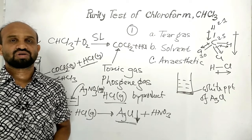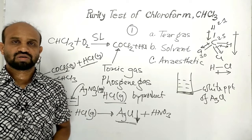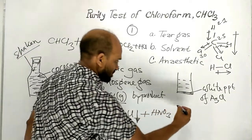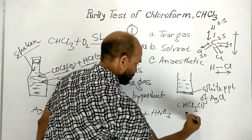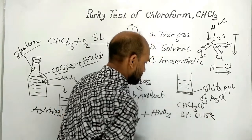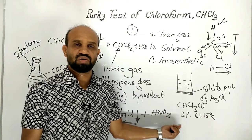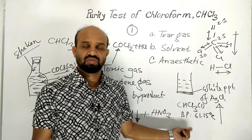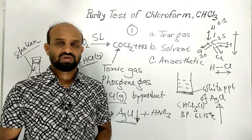In this way we can prove the presence of impurities in chloroform — this is the chemical purity test, by adding aqueous solution of silver nitrate to liquid chloroform. Another one is the physical purity test. Chloroform is a colorless, sweet-smelling liquid with a boiling point of 61.15 degrees Celsius. When chloroform contains impurities, its boiling point increases, and this increased boiling point proves that chloroform contains impurities.